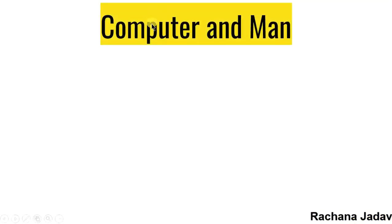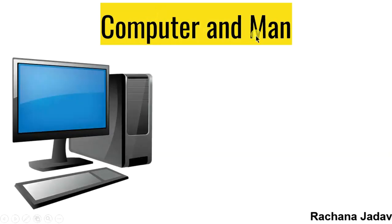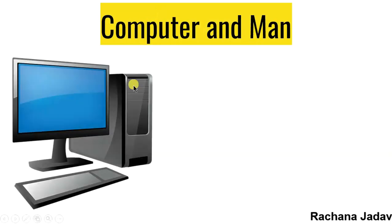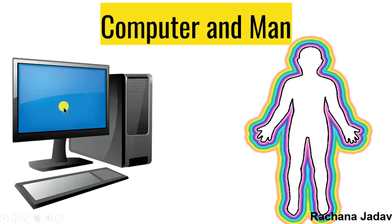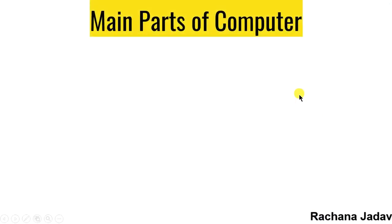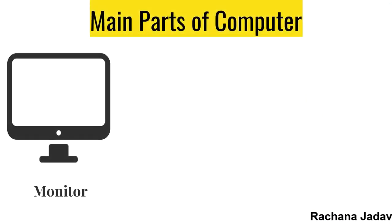First of all, we will see the difference between man and computer. Computer is a machine, while man is not a machine. Computer works on electronics — wo electronic device hai jo electricity se chalta hai — while man is a human being.